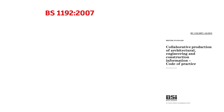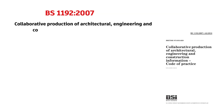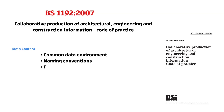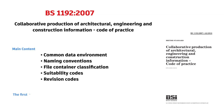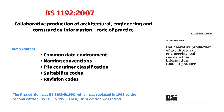Then in 2007, BS1192 was published — Collaborative Production of Architectural, Engineering and Construction Information: Code of Practice. Its main content covered the Common Data Environment, Naming Conventions, File Container Classification, Suitability Codes, and Revision Codes.